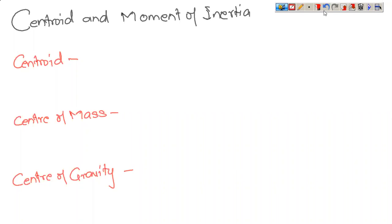Starting with centroid and moment of inertia, let us first ask why we actually need to find these out. Going back to when we were studying shear force and bending moment diagrams, uniformly distributed load behaves as a rectangle — constant load over a fixed distance. The centroid of that rectangle was assumed at L/2, and for a triangle, L/3 from the larger end and 2L/3 from the smaller end.